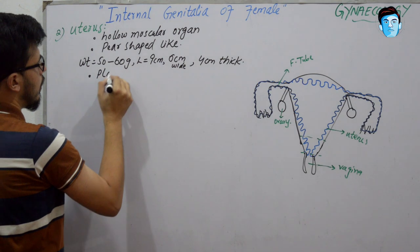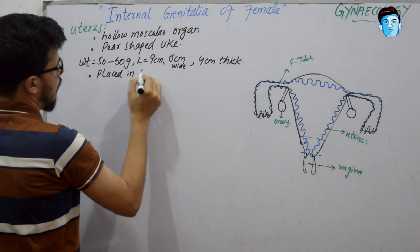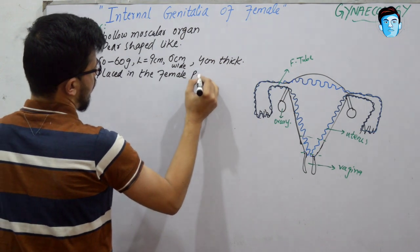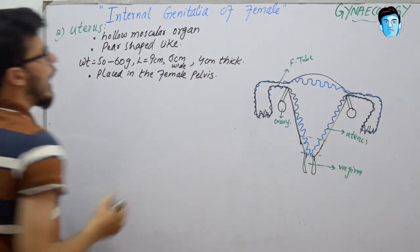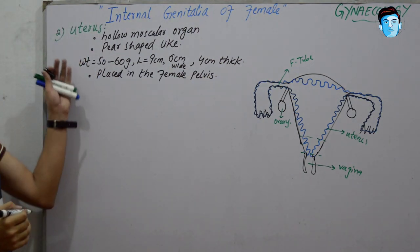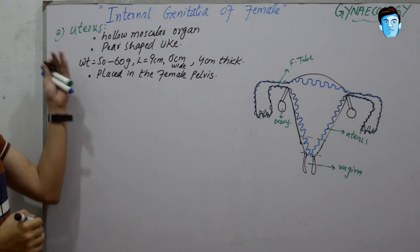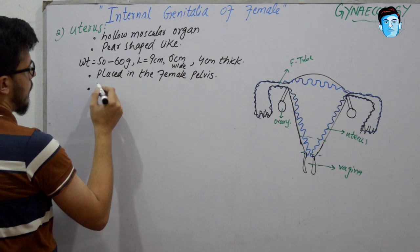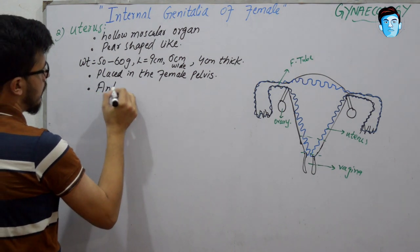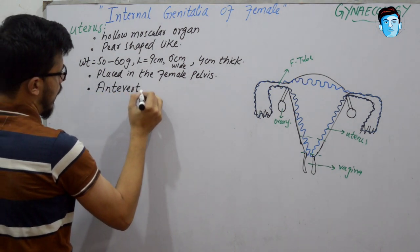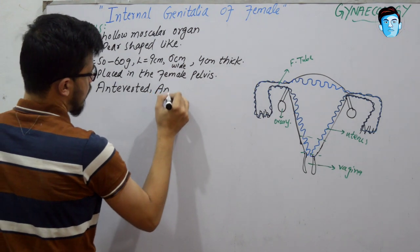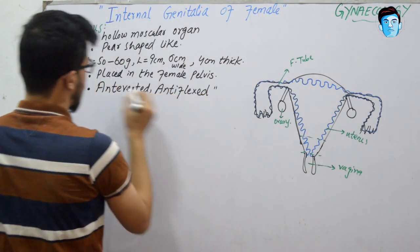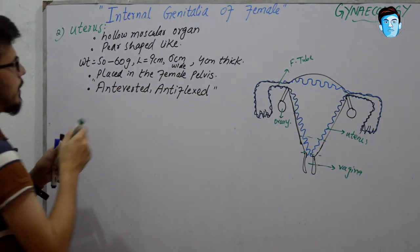The normal position of the uterus is anteverted and anteflexed. Anteverted refers to the angulation between the long axis of the cervix and the vagina, which is usually 90 degrees. These are the normal positions of the uterus.